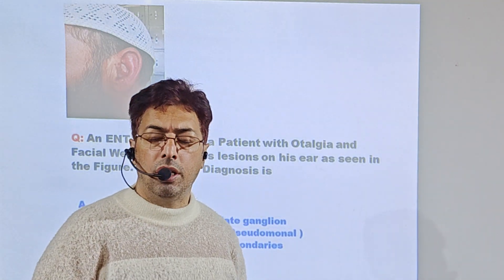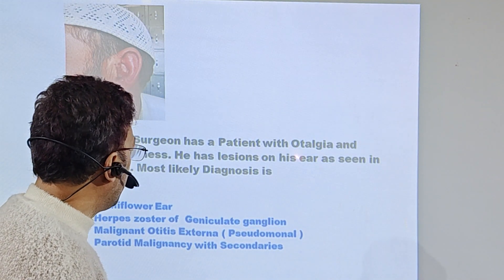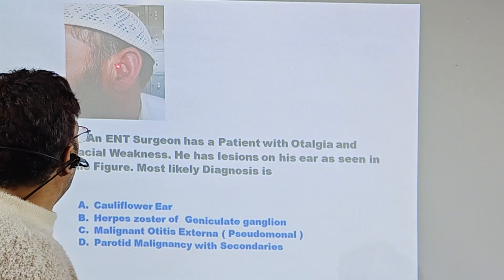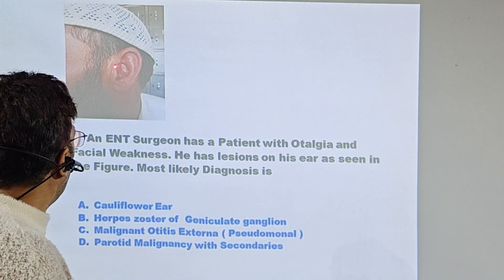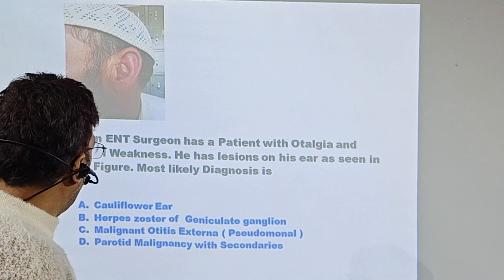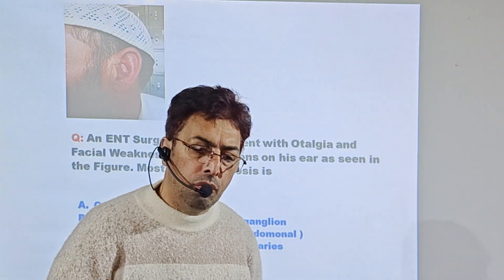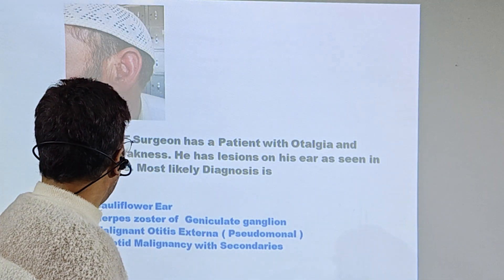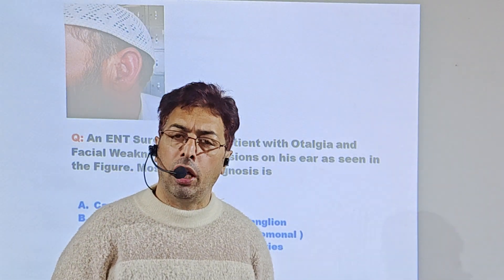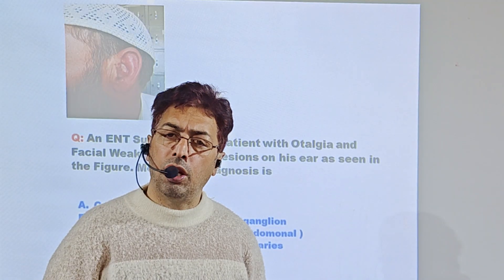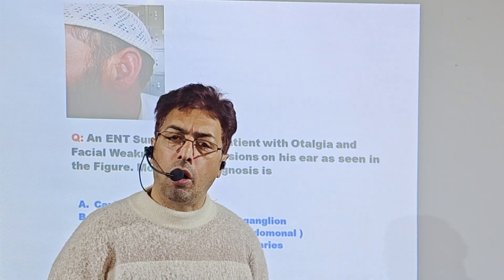The next question is from ENT — head and neck surgery. An ENT surgeon has a patient with otalgia (ear ache) and facial weakness, with lesions seen on the ear. You can see multiple lesions on the ear pinna and external ear. The examiner gives three features: otalgia, facial weakness, and lesions on the ear. A cauliflower ear with hematoma would require a history of trauma such as a fight causing hematoma formation within the ear pinna.